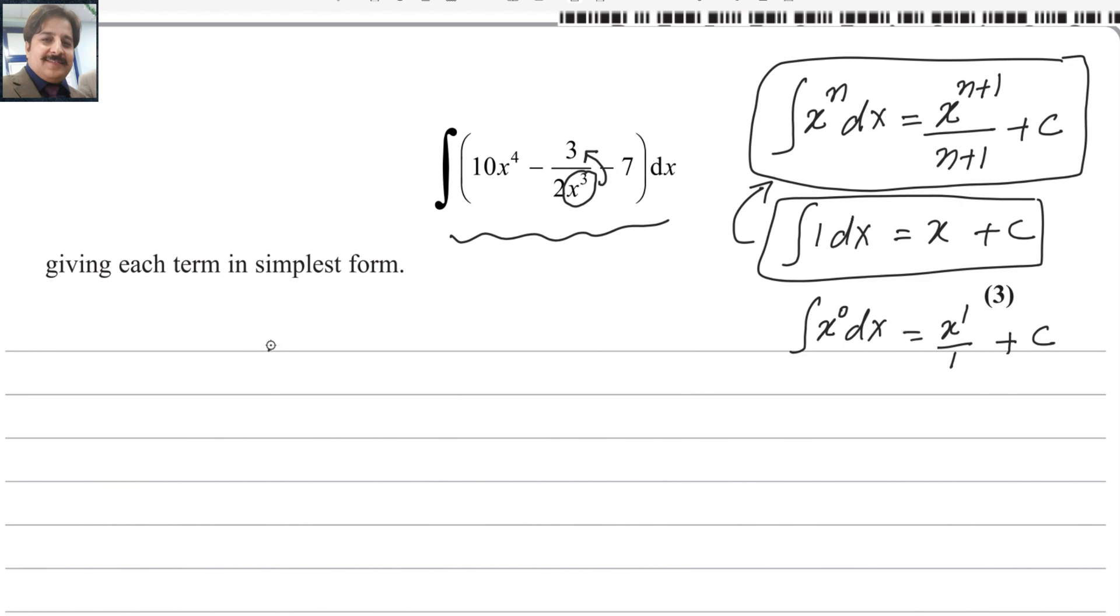In the next step, constant numbers should be written outside of the integral. You can apply the integral to every number inside the bracket. It will be x to the power 4 dx, and then minus 3 over 2 you can keep outside of the integral. And this becomes negative now. It will be x power minus 3 dx.